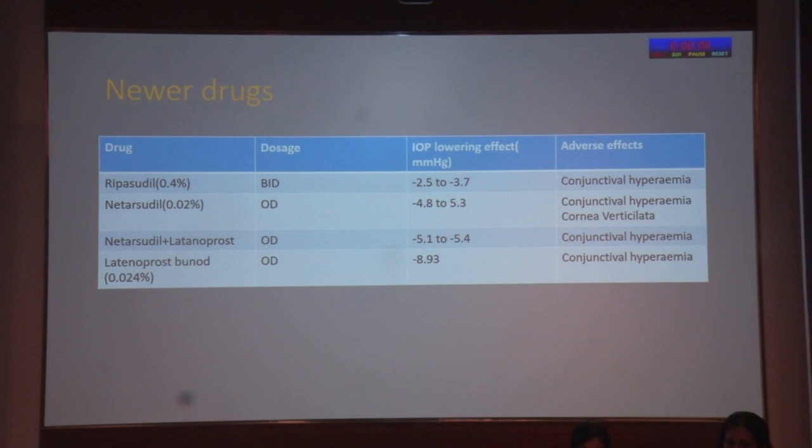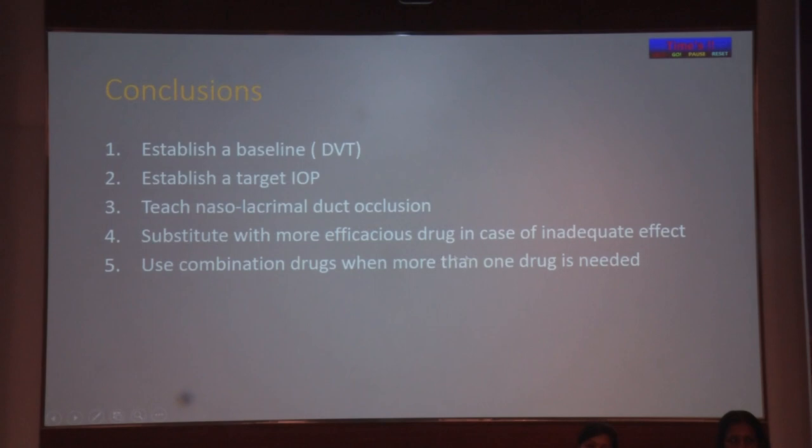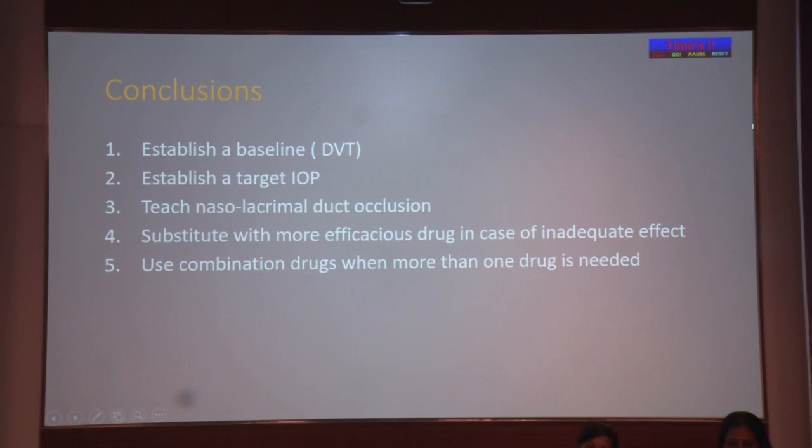Among newer drugs, we have ROCK inhibitors, which increase trabecular outflow, and combinations of ROCK inhibitors with latanoprost, though conjunctival hyperemia is a problem with all of them. In conclusion: establish a baseline; establish a target IOP; teach nasolacrimal duct occlusion to prevent side effects; substitute with more efficacious drugs in case of inadequate effect; and use combination drugs when more than one drug is needed. Thank you.